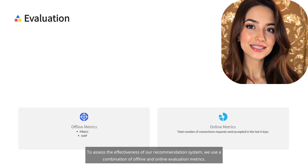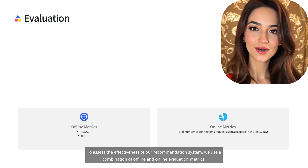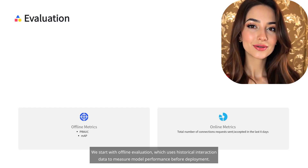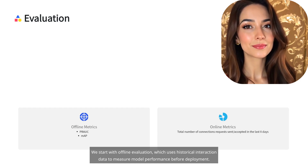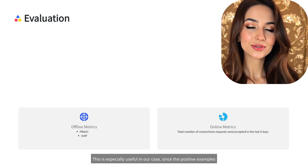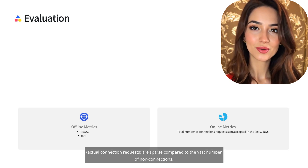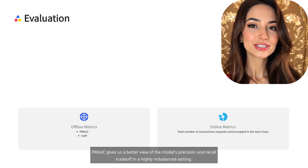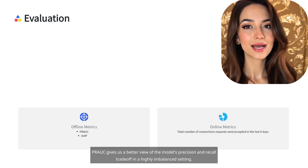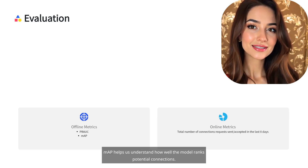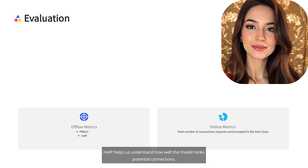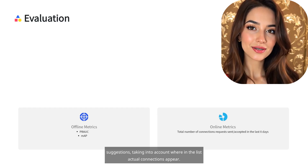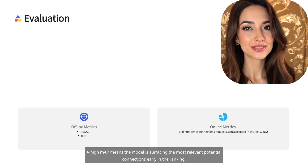This results in better quality recommendations — not just based on profile similarity, but based on where you are in the graph. To assess the effectiveness of our recommendation system, we use a combination of offline and online evaluation metrics. For offline evaluation using historical interaction data: PRAUC (Precision-Recall AUC) is especially useful since positive examples (actual connection requests) are sparse compared to the vast number of non-connections, giving a better view of precision-recall trade-off in a highly imbalanced setting. MAP (Mean Average Precision) helps us understand how well the model ranks potential connections, averaging precision across all users for the ranked list — a high MAP means the model is surfacing the most relevant potential connections early in the ranking.